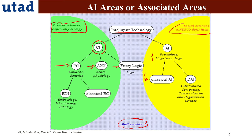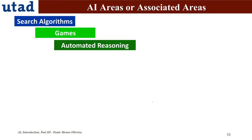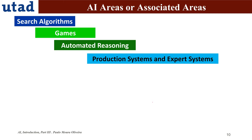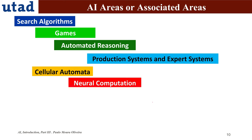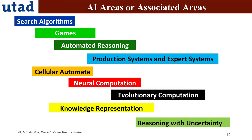As usual, this is a taxonomy and quite an old one. Other areas of artificial intelligence include search algorithms, games, automated reasoning, production systems and expert systems, cellular automata, neural computation, evolutionary computation, knowledge representation, and reasoning with uncertainty. All these are main topics in an introduction course to artificial intelligence, and we are going to address all of them in this course.